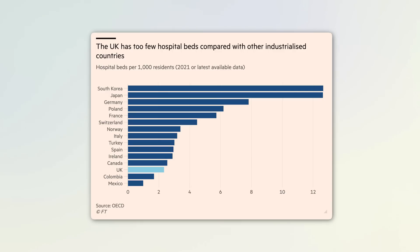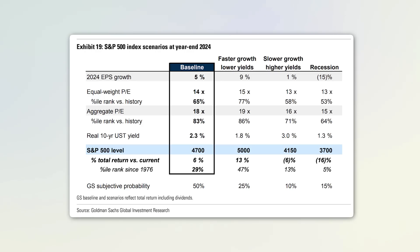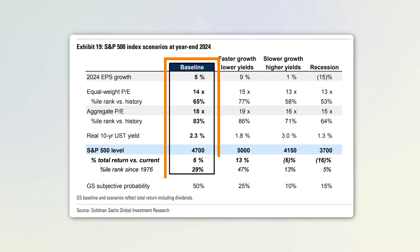Looking at real-world examples: a Financial Times chart clearly tries to get you to focus on the UK, the only line in a slightly different color. These attributes also work in table format — in this Goldman Sachs visual, they've created an enclosure to emphasize the baseline column area.